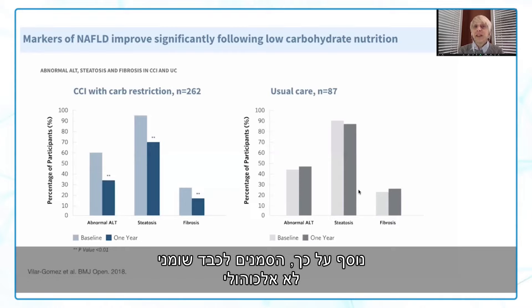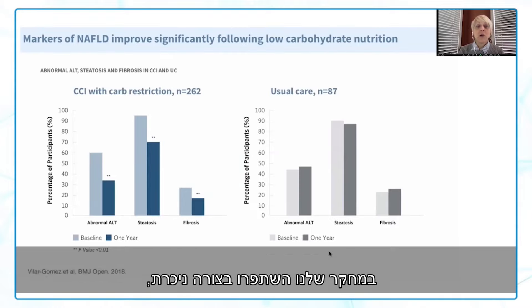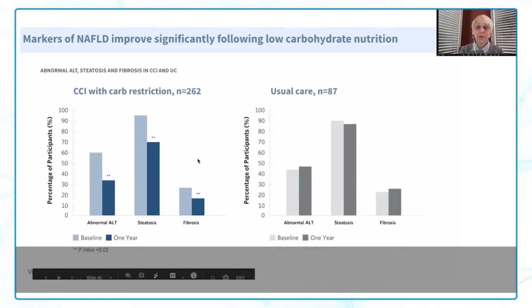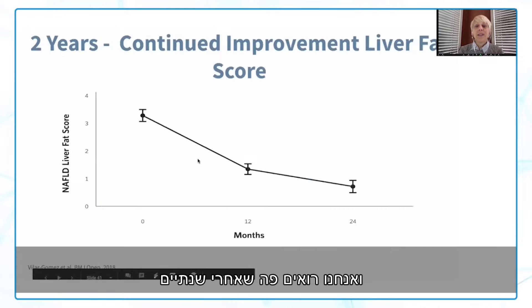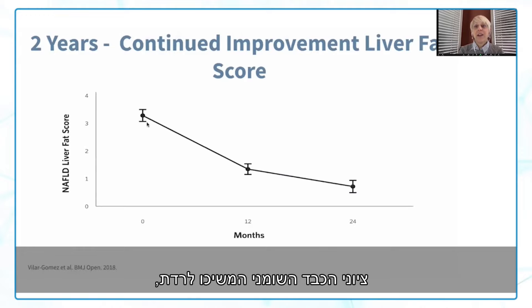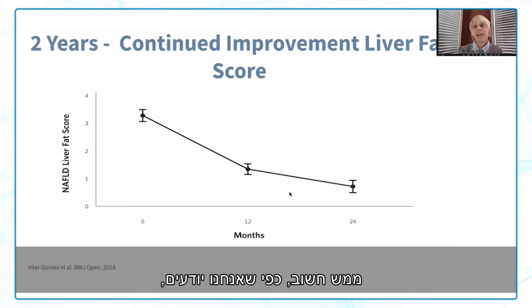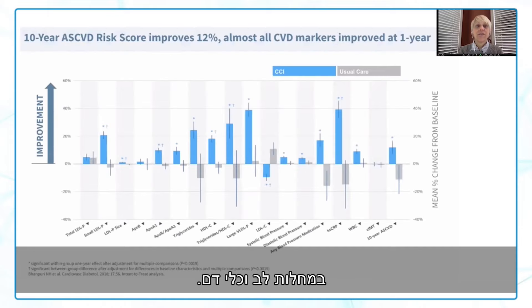Markers of non-alcoholic fatty liver disease significantly improved in our study. At two years, liver fat scores continued to drop. This is really important, as fatty liver disease is also a significant risk factor for cardiovascular disease.